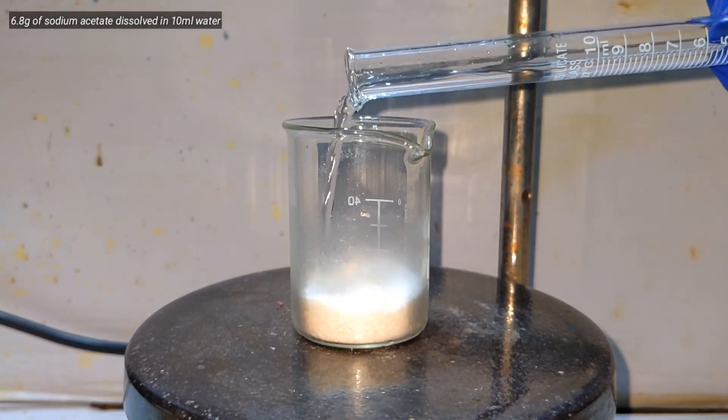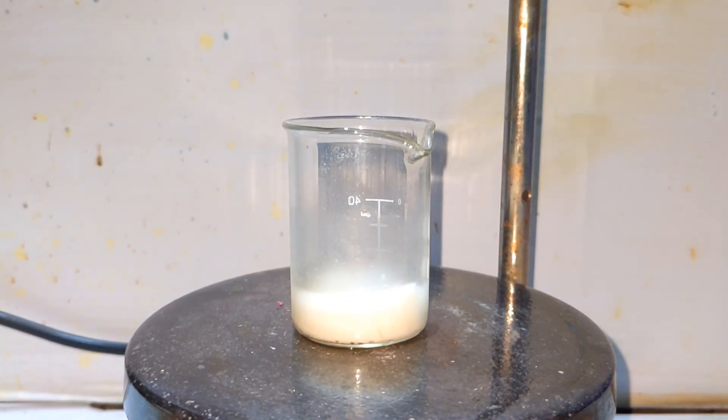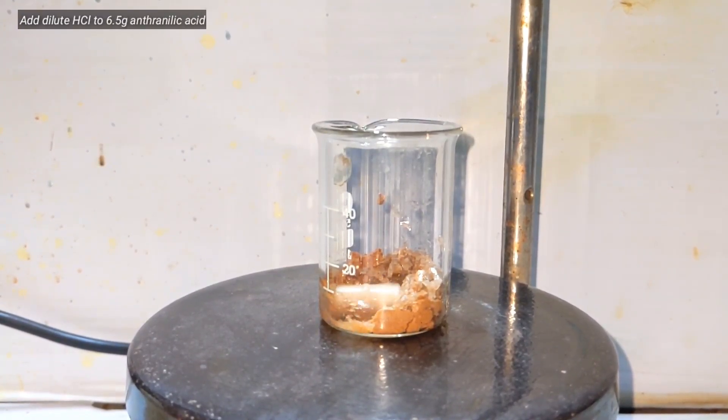The third solution is made by dissolving 6.8 grams of sodium acetate in 10 milliliters of distilled water. Now keep all those three solutions aside and let's start.